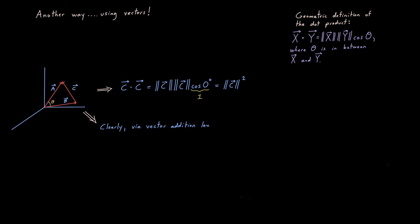In this case, the magnitude of C squared. Next, note by vector addition, whether I do tail arrowhead, tail arrowhead, or parallelogram law, C is A minus B.